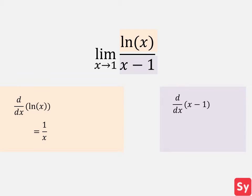Now we'll take the derivative of the denominator, x minus 1. We'll apply the sum difference rule, and we'll get the derivative of x minus the derivative of 1. We'll get 1 minus 0, and that'll simplify to 1.